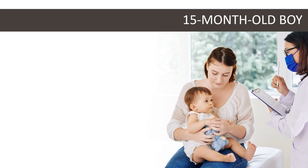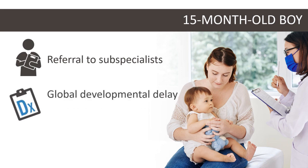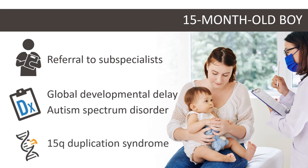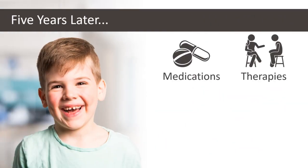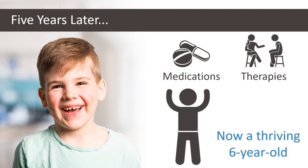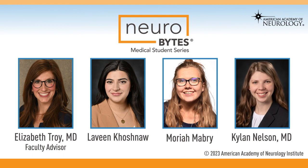Let's get back to our case. From his preventative care visit, our patient was referred to sub-specialists where he was diagnosed with global developmental delay and autism spectrum disorder. Genetic testing ultimately revealed a unifying diagnosis of chromosome 15q duplication syndrome. Through appropriate use of medications and tremendous work with his support network, he has made consistent progress and is now a thriving six-year-old. For more information on this and other neurologic conditions, please visit aan.com/neurobytes.